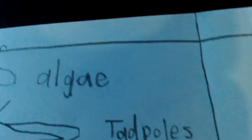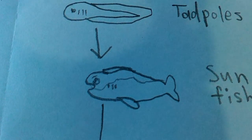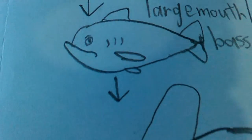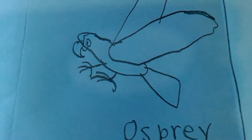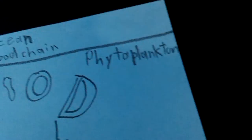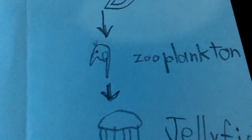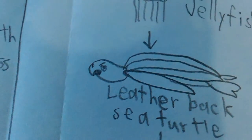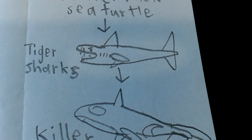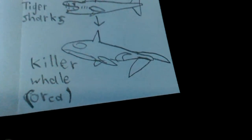Sorry guys, golden eagles don't get eaten by algae — I moved on to the next food chain by accident. Golden eagles are apex predators, no animals eat them. Algae is eaten by tadpoles, eaten by sunfish — freshwater sunfish, not the ocean sunfish — they get eaten by largemouth bass, then ospreys. Ospreys are the apex predator because no animal eats them. In the ocean: microscopic phytoplankton is the plant, microscopic zooplankton eats the phytoplankton, jellyfish eat the zooplankton, leatherback sea turtles eat the jellyfish, tiger sharks eat the leatherbacks, and killer whales eat the tiger sharks.